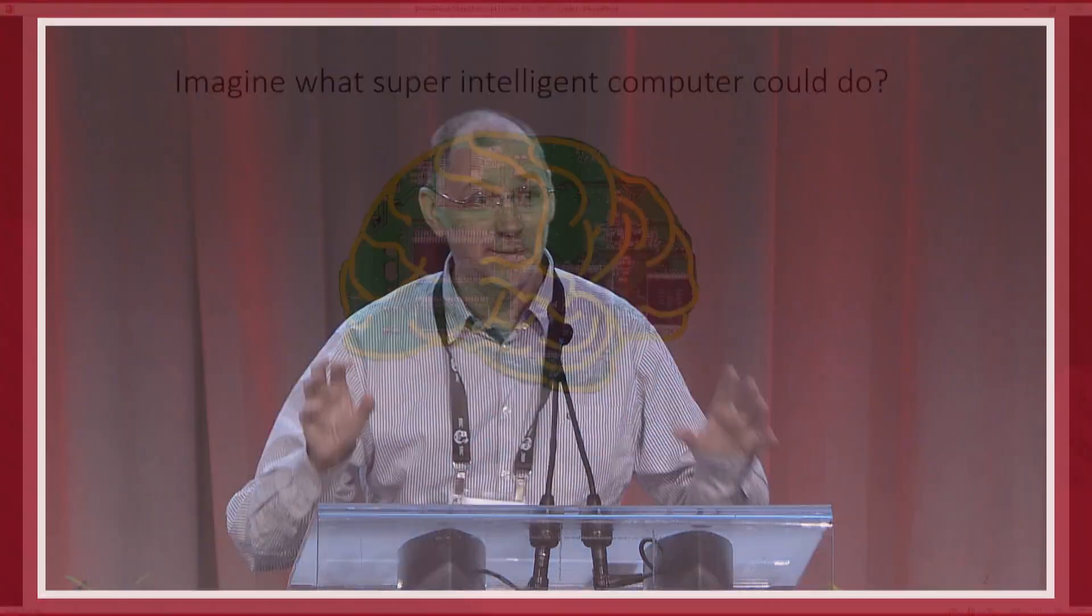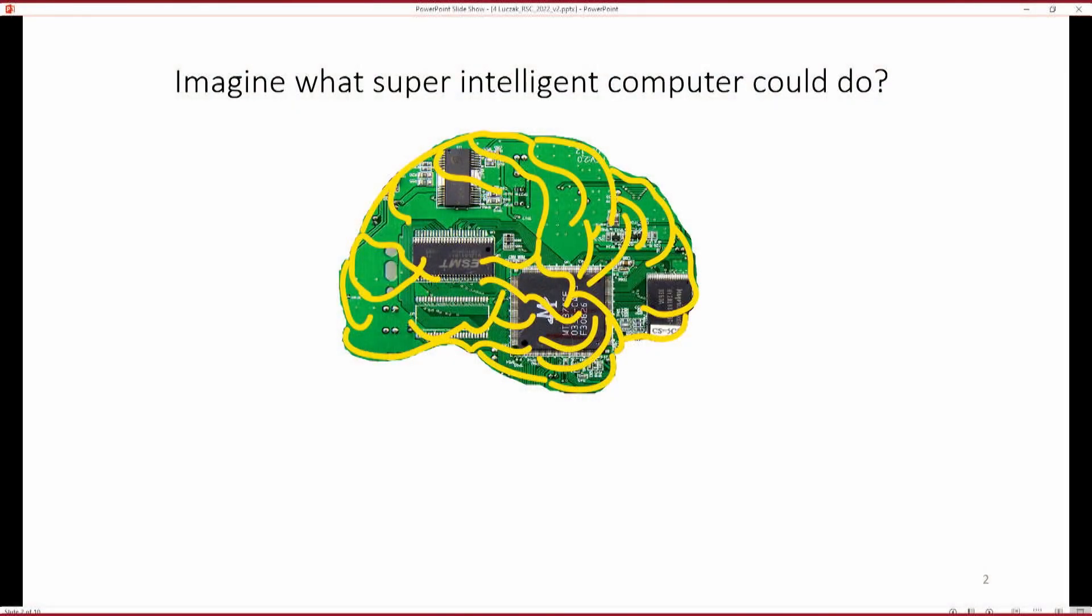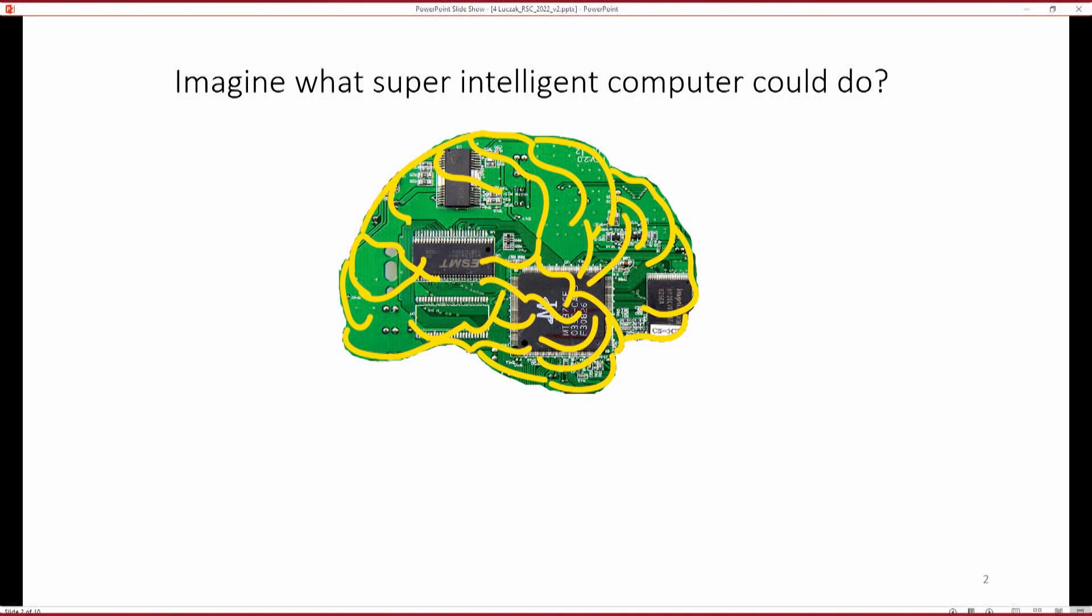Okay. So try to imagine what would happen if we could build computer which would be smarter than thousands of professors taken together. Well, all the problems with climate change would be probably solved in a week like that. The unified theory of physics, of quantum physics and gravity would be probably solved in a year. Treatment for cancer would be solved in a few months. So all of those possibilities are there if we can build such computers which are smarter than humans.